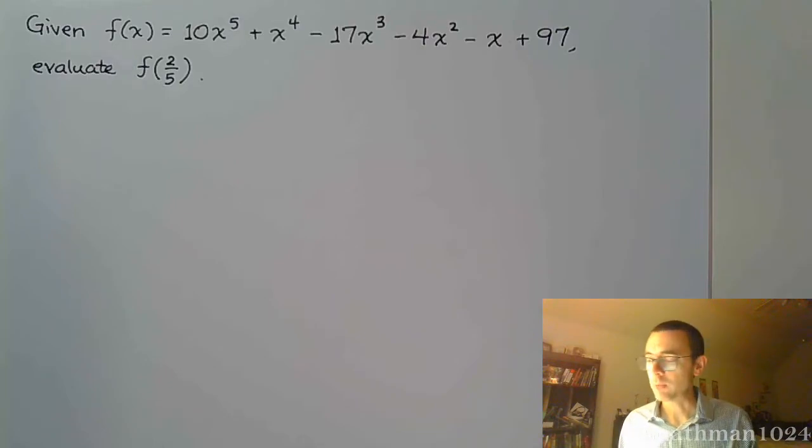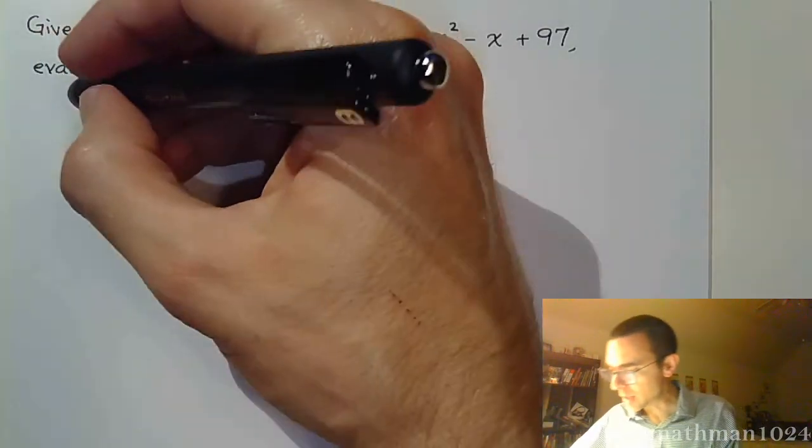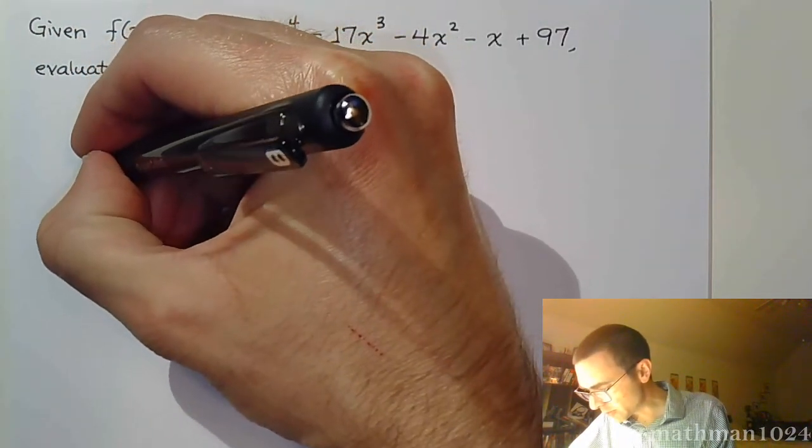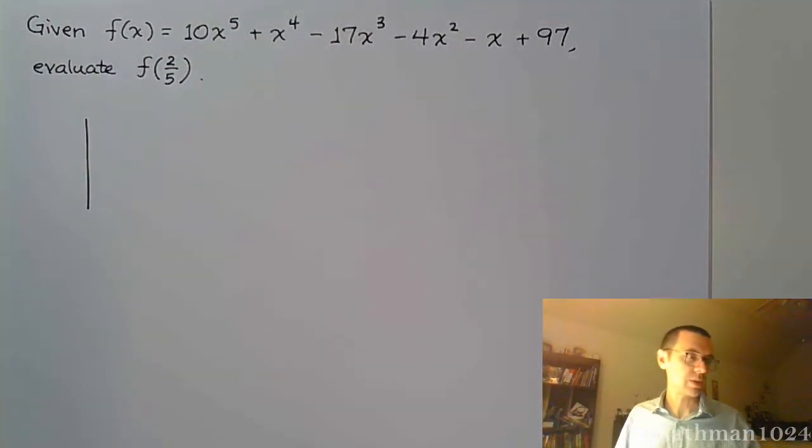So, the next problem on the handout was for you to take this polynomial of degree 5 and evaluate it for an x value of 2 over 5. So it's a little bit more challenging than the negative 1 half that we had in the last problem, but remember, fractions are just numbers.